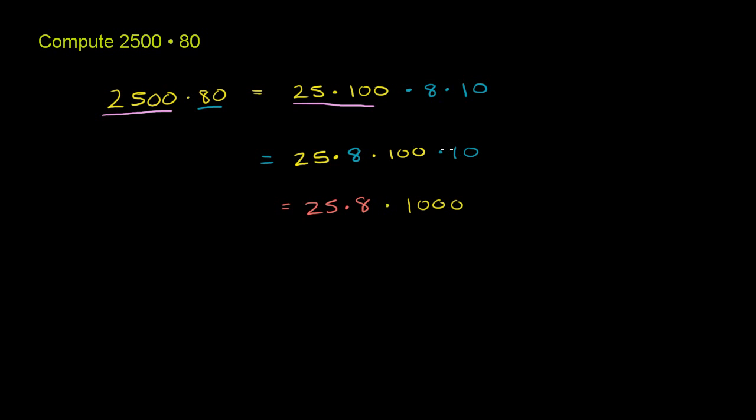And whenever you multiply powers of 10, the way you can think about it is you just literally add the zeros. You had two zeros here, you have one zero here. When you take their product, you're going to get something with three zeros. 100 times 10 is 1,000.